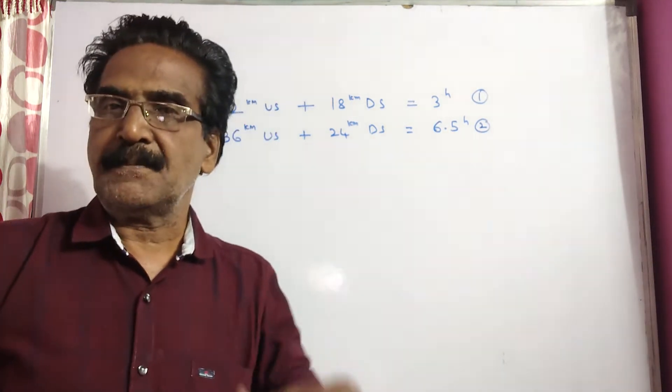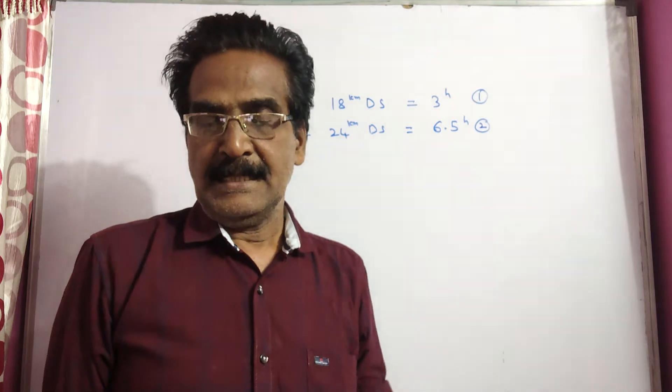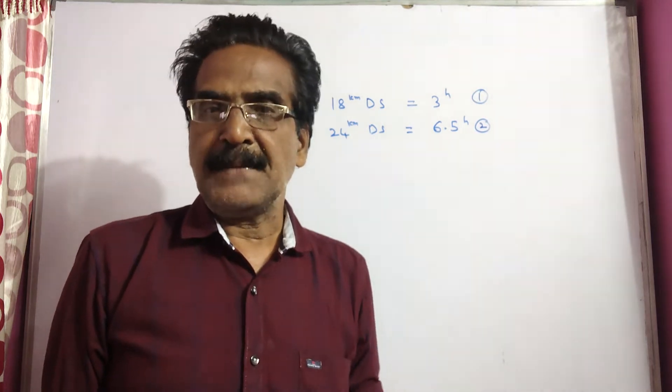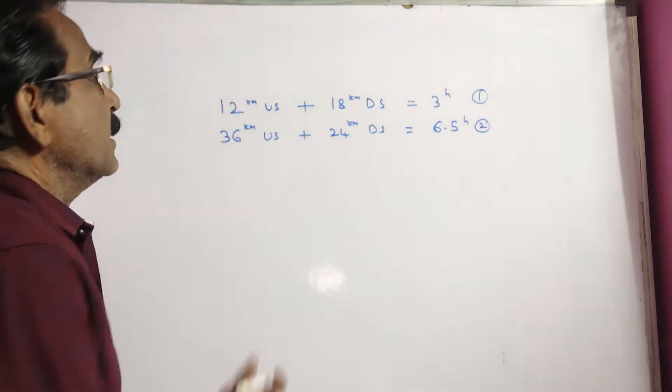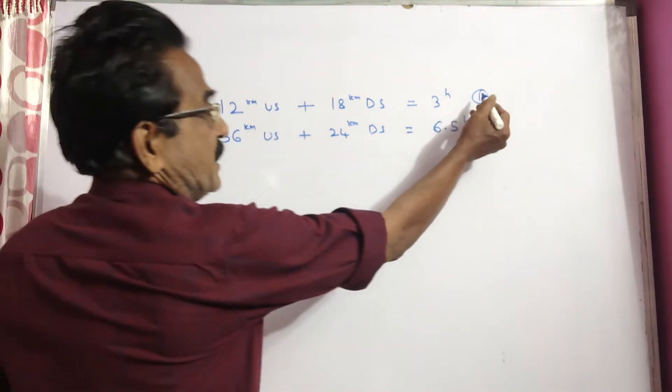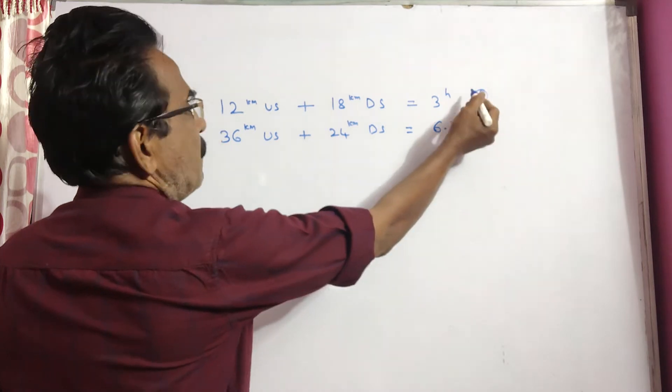Then what are the respective speeds of the boat and stream? This is equation 1, and this is equation 2.